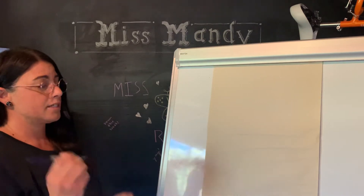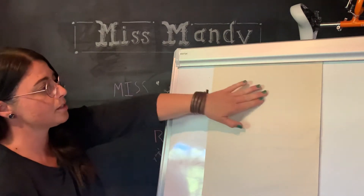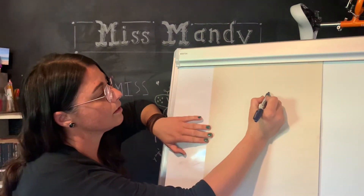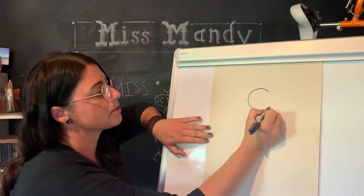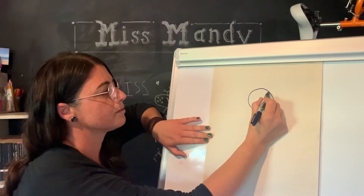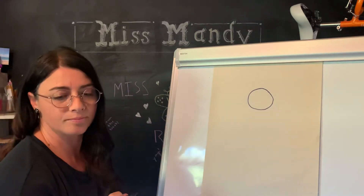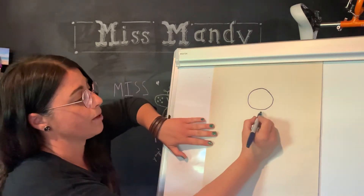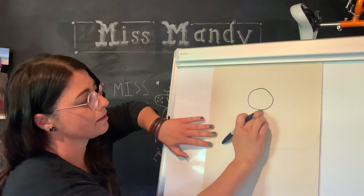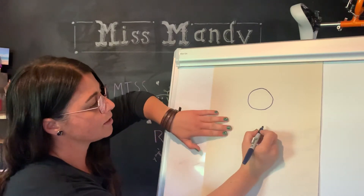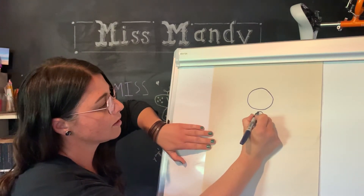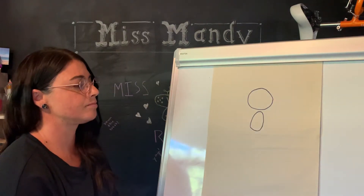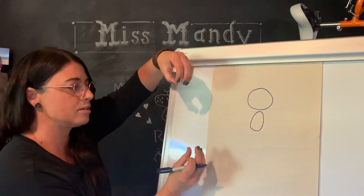So we're gonna start with our black marker and we're going to do a small circle towards the top of your paper. This is going to be your butterfly's head. Next we're going to be drawing an oval shape — we're going to go right underneath this small circle and do a long oval shape. That's just a long stretched out circle.